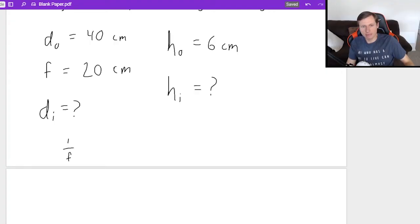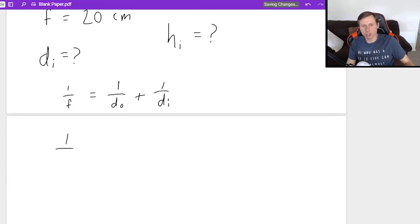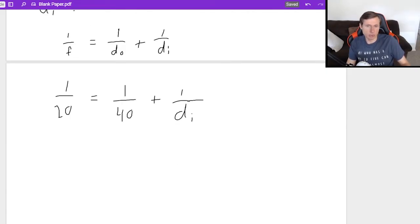So first we're going to use the equation 1 over F equals 1 over DO plus 1 over DI. F is 20. So 1 over 20 equals 1 over DO, which is 40 plus 1 over DI. Most of the time your teacher will let you use your calculator for these problems. So I'm going to do that while we do this.